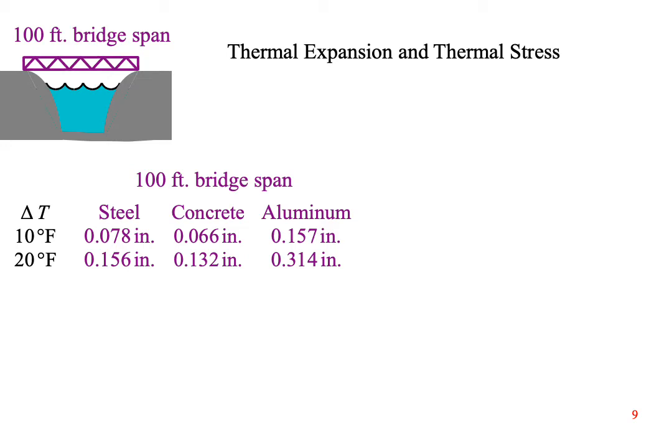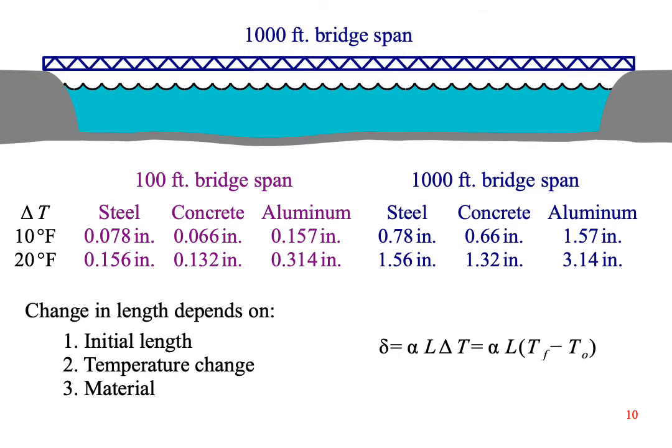Consider a bridge span that starts out 100 feet long. If the temperature increases 10 degrees Fahrenheit, a steel bridge will lengthen by 0.078 inches. If the temperature increases 20 degrees Fahrenheit, a steel bridge will lengthen 0.156 inches. A concrete bridge will expand almost as much as a steel bridge, but an aluminum bridge will expand about twice as much. What if the bridge is 1000 feet long? The result is that the bridge will expand a lot more. As you look at the table, you'll notice that the change in length depends on three things: the initial length, the temperature change, and the material.